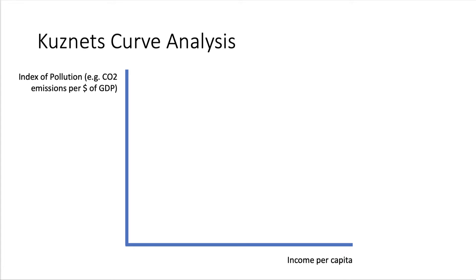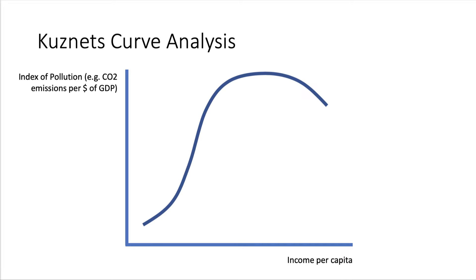We put an index of pollution on the y-axis — a classic example might be CO2 emissions per dollar of GDP, or perhaps sulfur dioxide emissions, some sort of index of pollution or environmental degradation. On the x-axis, a measure of income per capita, perhaps adjusted for inflation and PPP. The idea is that there is a non-linear relationship between pollution emissions per capita or per unit of GDP and wealth.